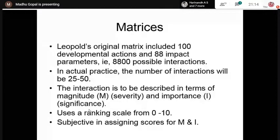The interaction is described in terms of magnitude and importance of significance. A ranking scale from 0 to 10 is used, though a lot of subjectivity is involved. You can also develop a three-dimensional impact matrix. Network methodologies are also available — these are networks that consider the primary and secondary impacts due to a particular element of impact.